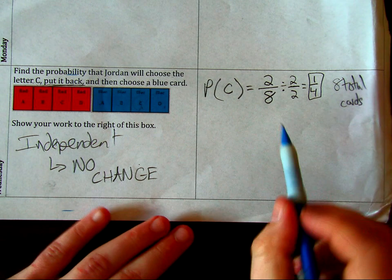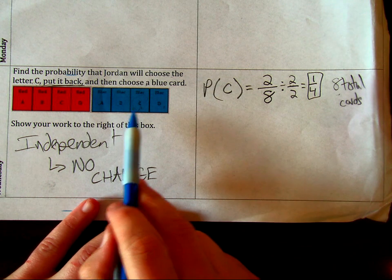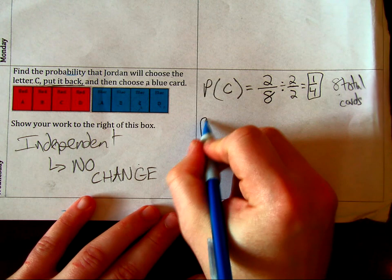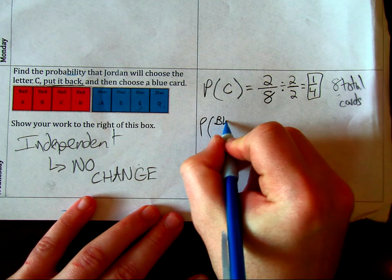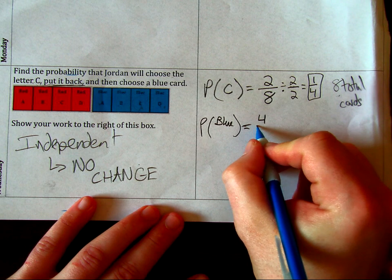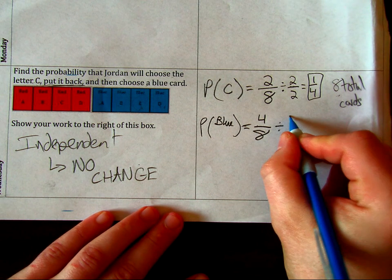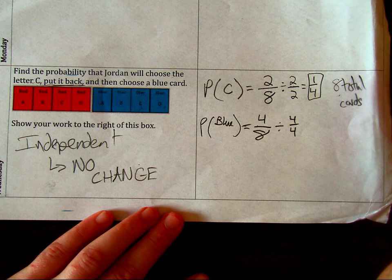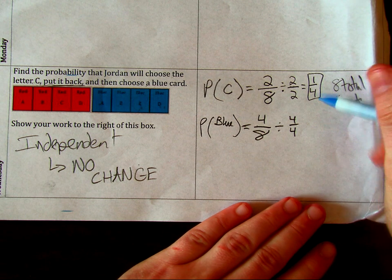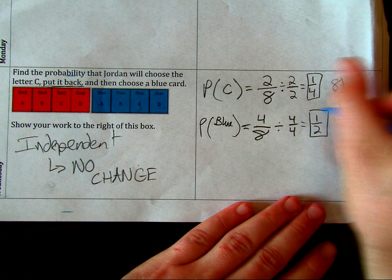Since we put it back, again, we still have 8 total cards. And then we say, okay, how many blue cards do you have? Well, we have 1, 2, 3, 4 cards. So we're going to say, probability of picking a blue is going to be 4 blue cards out of the total, 8 cards. Again, divide by the common factor of 4. And so we get 1/2. Half of the cards are blue.